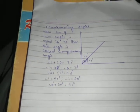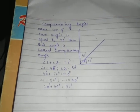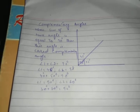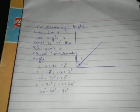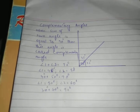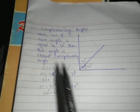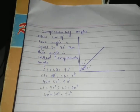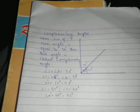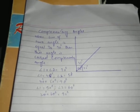Assalamualaikum viewers. Today we will discuss about complementary angles. We will first know about its definition. When the sum of two angles is equal to 90 degrees, then these angles are called complementary angles.